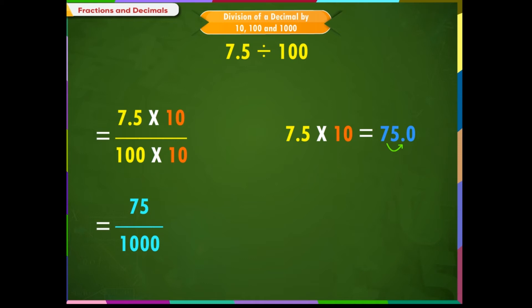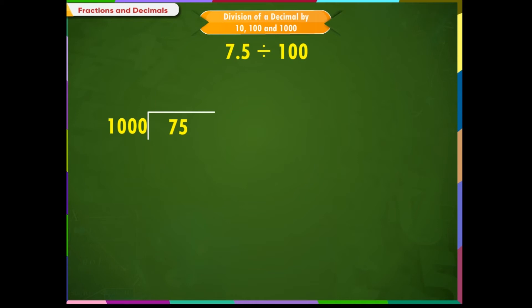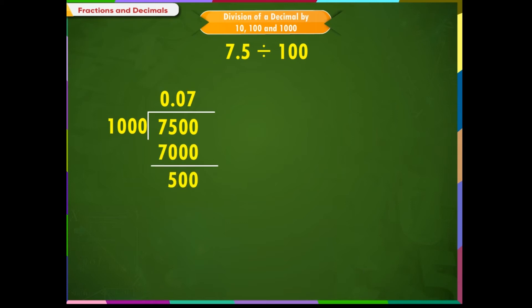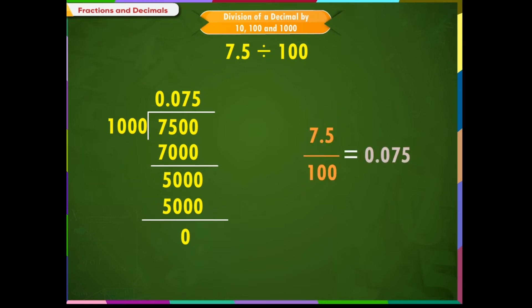Now, we will solve the problem using the long division method. We put a decimal on top and add one zero to the dividend. 750 is still smaller than 1000 and it cannot be divided. So, we put 0 on top and add one more zero to the dividend. 1000 into 7 is 7000 and 500 is remaining. Since 500 will not get divided by 1000, we put 0 here. 1000 into 5 is 5000 and the remainder is 0. Thus, we get 7.5 divided by 100 equals 0.075.